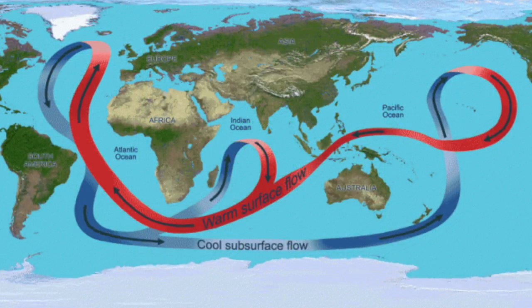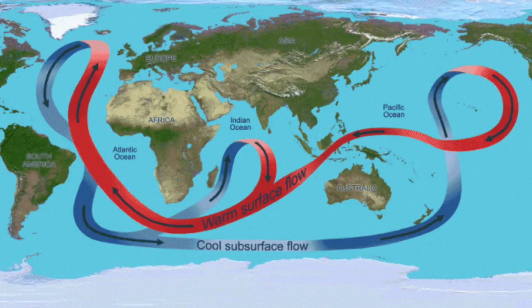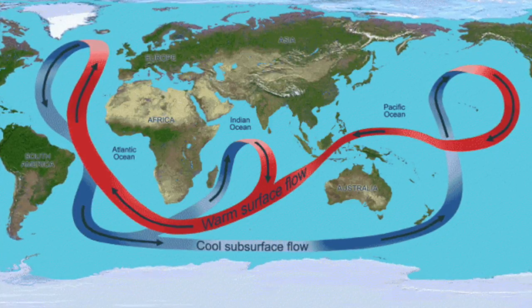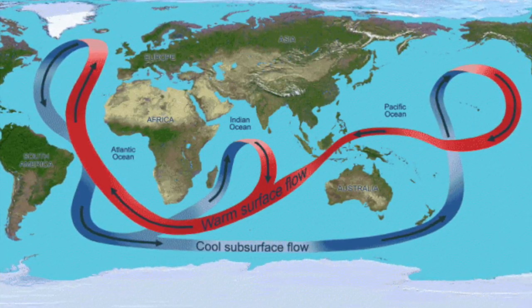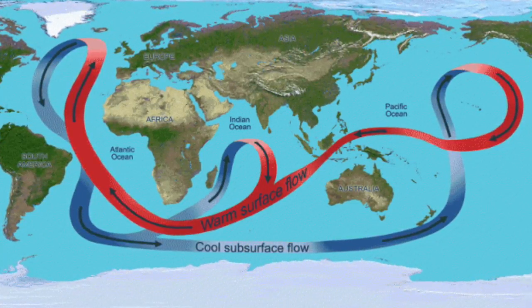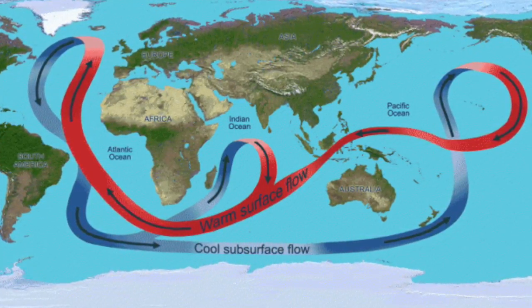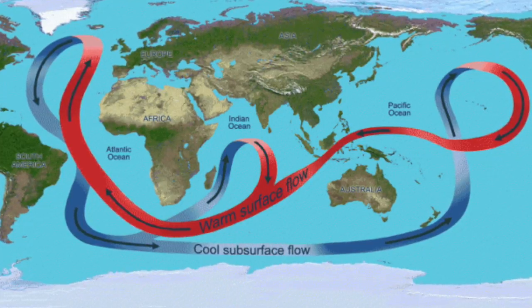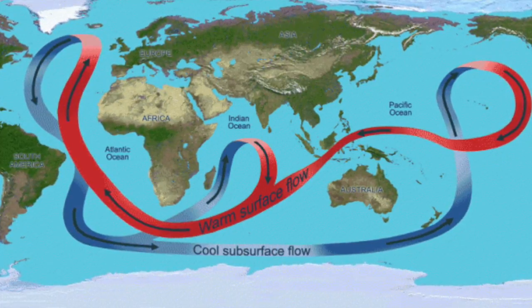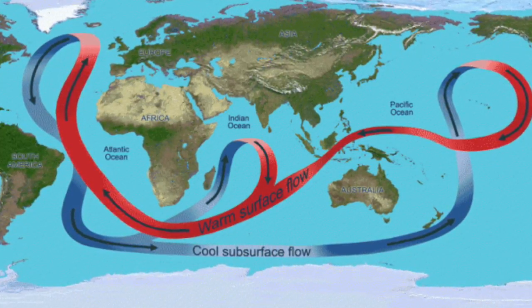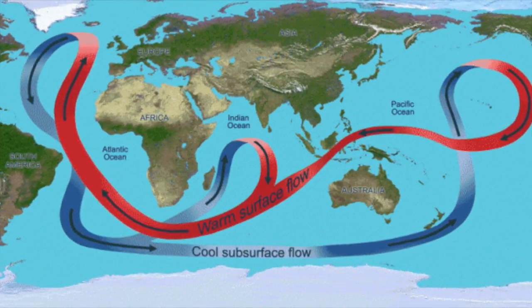Other factors have slight impacts on the ocean's currents, such as the formation of the ocean floor and wind patterns. In conclusion, though, the two main factors that cause the ocean currents to move are the temperature and the salinity of the water.